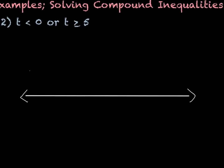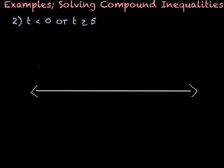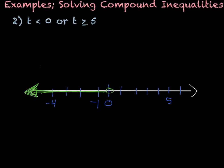For this next example, we have t is less than 0 or t is greater than or equal to 5. So t is less than 0 means an open circle on 0 and anything below that. The next part says t is greater than or equal to 5, so a filled-in circle on 5 and anything bigger than that. It's got two parts but they're split, so you've got to be careful on that.